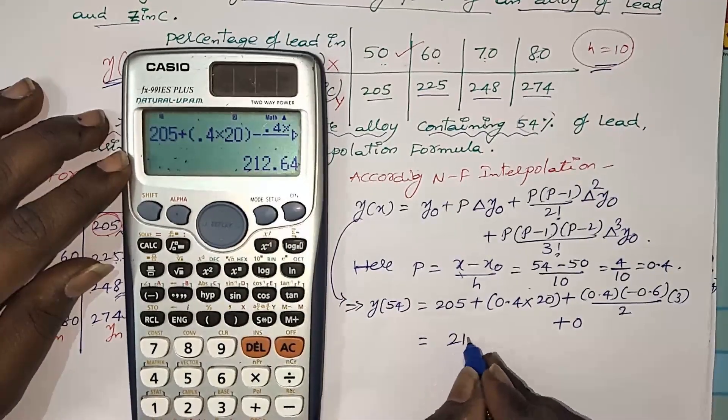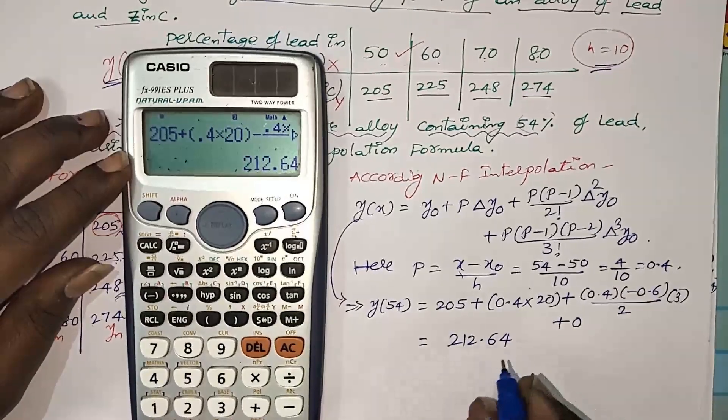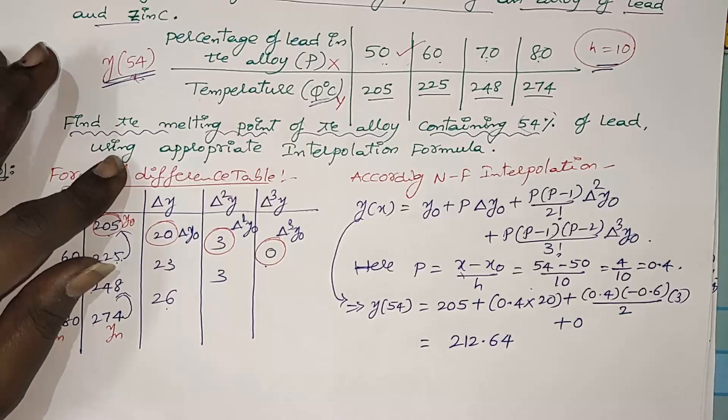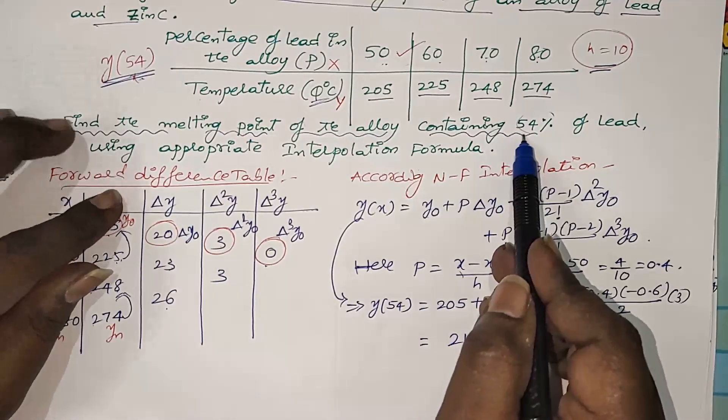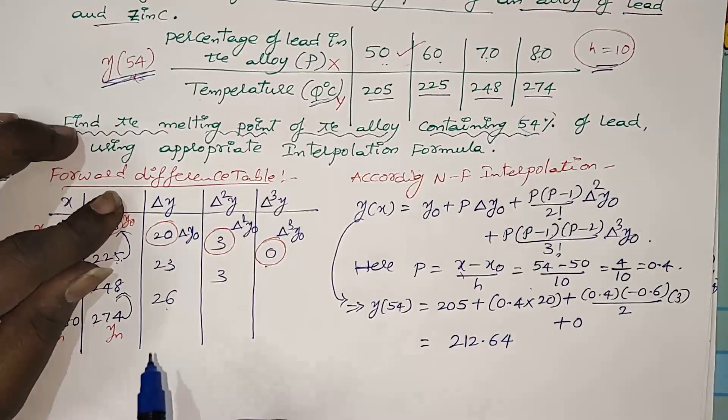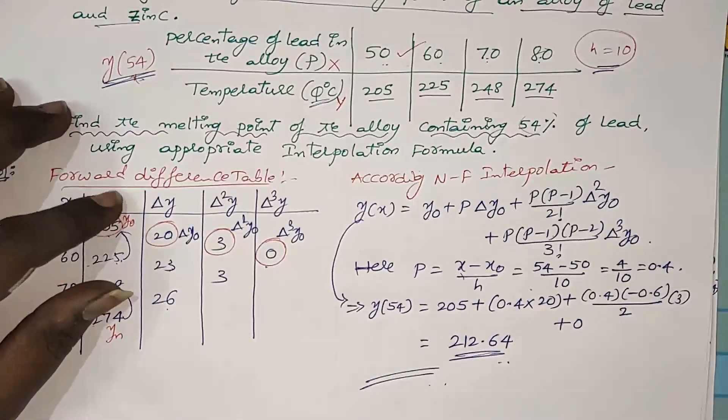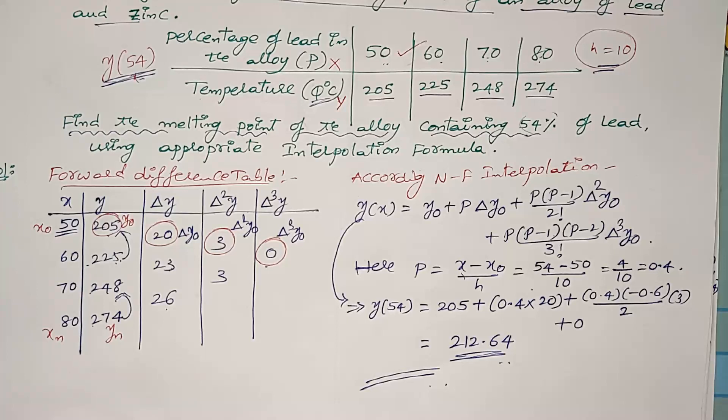I got 212.64. This is the required temperature to get 54 percentage of lead in the alloy. This is the melting point. Thank you very much. In the next video I will give you some more application problems on interpolation. Thank you.